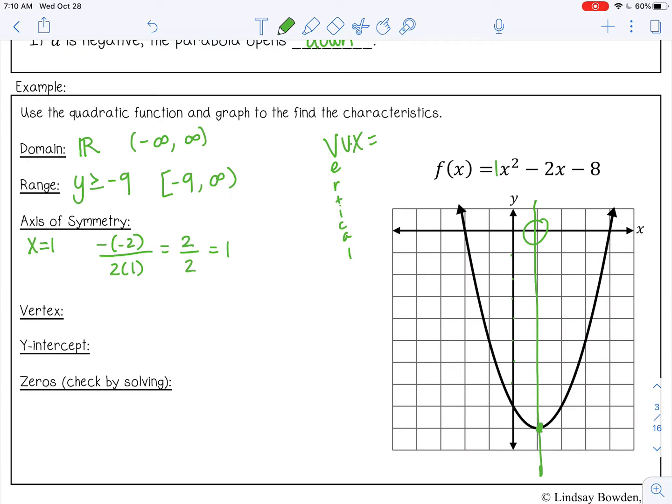The vertex is down here, this point, which is 1, negative 9. The y-intercept looks like it's here. So that would be 0, negative 8.